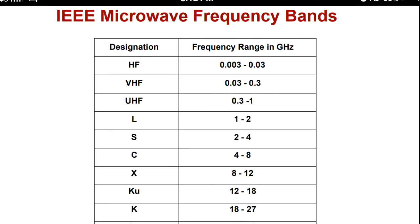Microwave frequencies are grouped together to form smaller bands. IEEE has given us microwave frequency bands. The first one is high frequency, that is 0.003 to 0.03 gigahertz. Next is very high frequency, that is 0.03 to 0.3 gigahertz. UHF, that is ultra high frequency, ranges from 0.3 to 1 gigahertz.